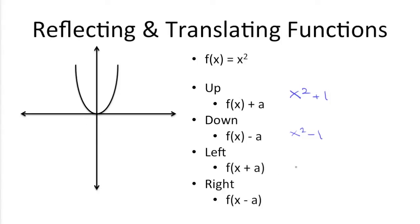Now to move the parabola left one unit, all we need to do is substitute the x value inside the parentheses with x plus 1, meaning we'll get x plus 1 squared. And here to move to the right, all you need to do is subtract one unit.